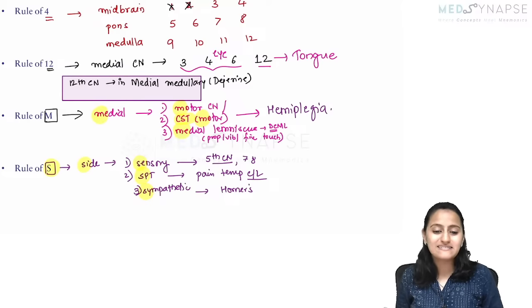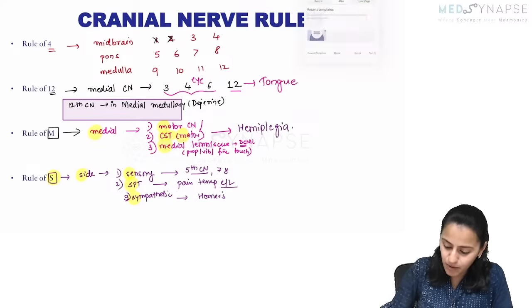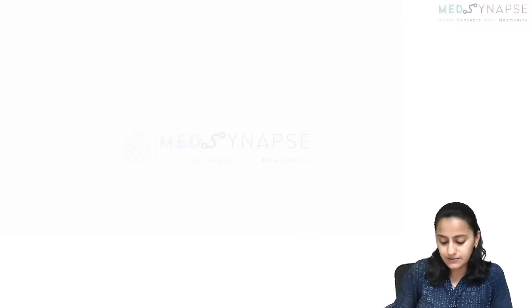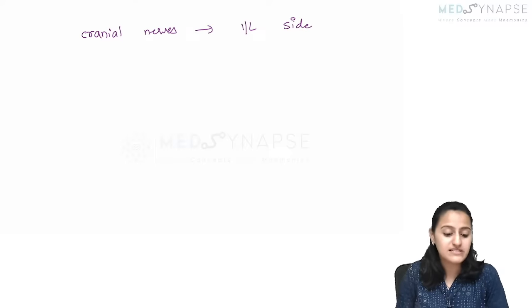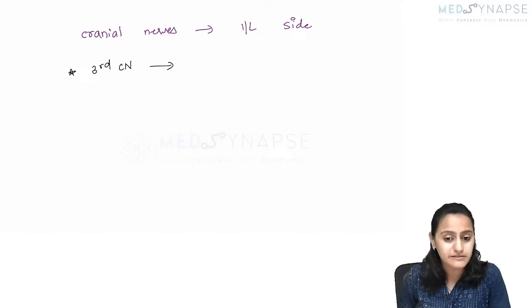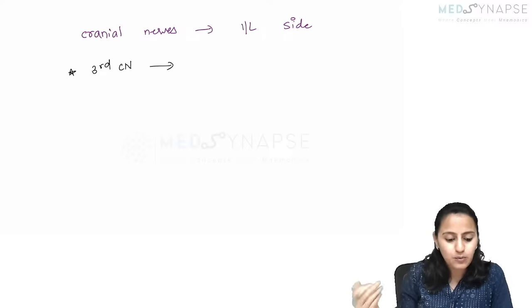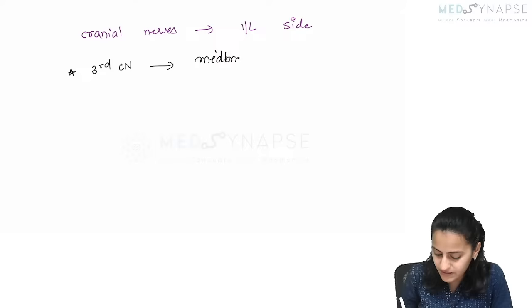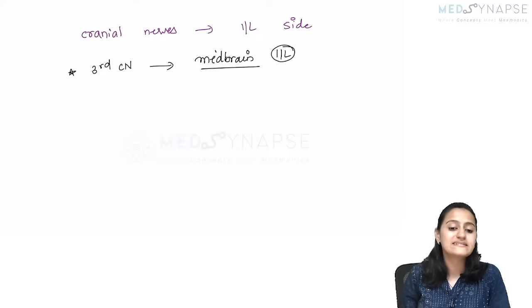In lateral medullary syndrome — lateral meaning on the side — you will see pain and temperature going, Horner's will be there. But you will not see hemiplegia, and you will not see loss of proprioception and vibration, because those are medial. So to summarize: medial = motor (corticospinal tract + medial lemniscus); side/lateral = sensory (spinothalamic tract + sympathetic trunk).